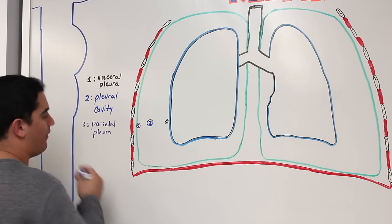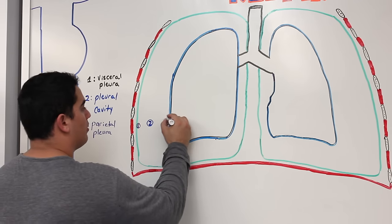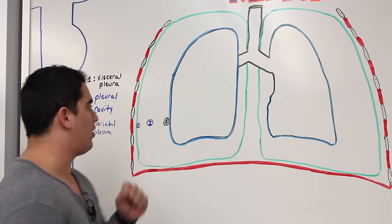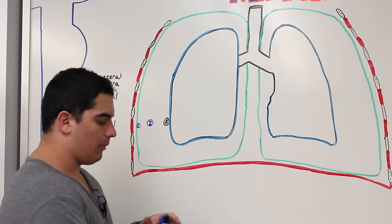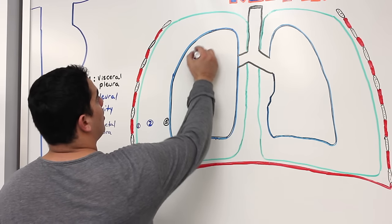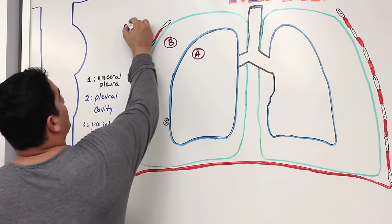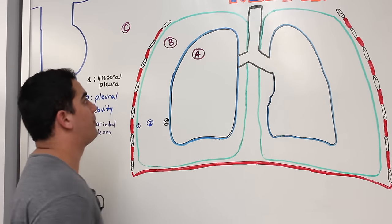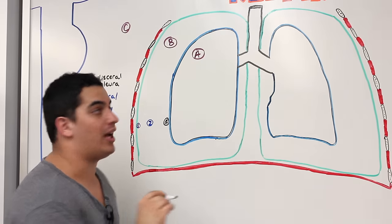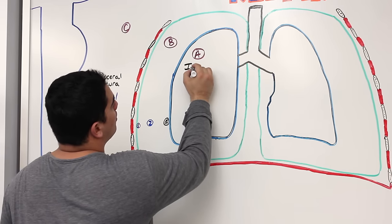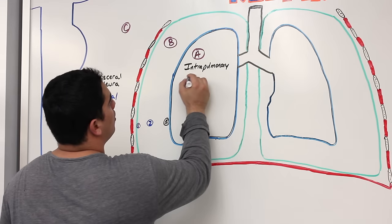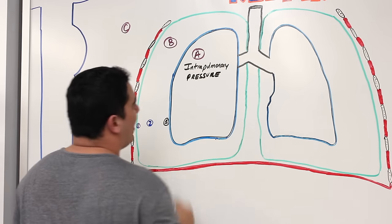Now we need to talk about pressures — an important topic. There are three main pressures we're going to discuss: A, B, and C. Pressure A is referred to as the intrapulmonary pressure, also called intra-alveolar pressure.